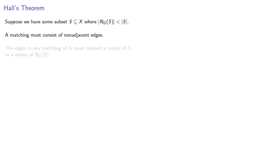So let's prove that. Suppose we have some subset S of X where the neighborhood of S is smaller than S itself. A matching must consist of non-adjacent edges. The edges in any matching of G must connect a vertex of S to a vertex of the neighborhood of S because these are the only vertices that are going to be adjacent. But since the neighborhood of S is smaller than S, then at least one vertex in S cannot be saturated in a matching. And that's because, well, I'm sure there's a good reason for it. And so no matching can saturate X.